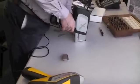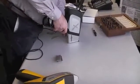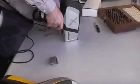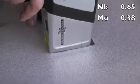We take our instrument, set it on here, do a quick test. I'll run this about three seconds and stop it. We've got niobium at 0.67, molybdenum at 0.31.